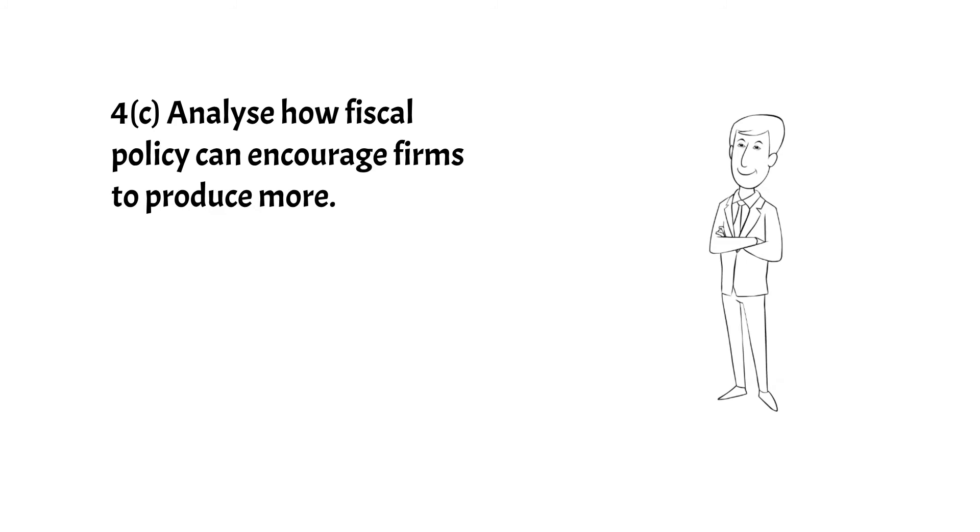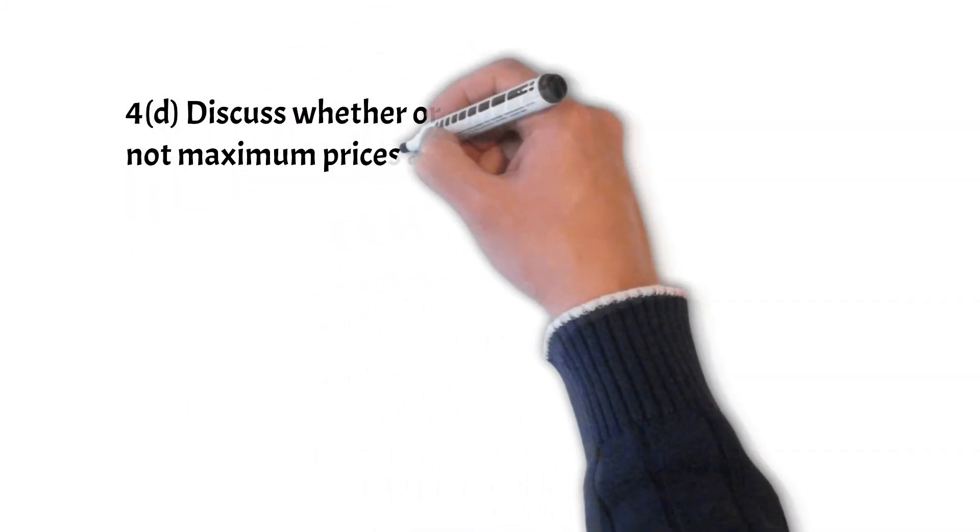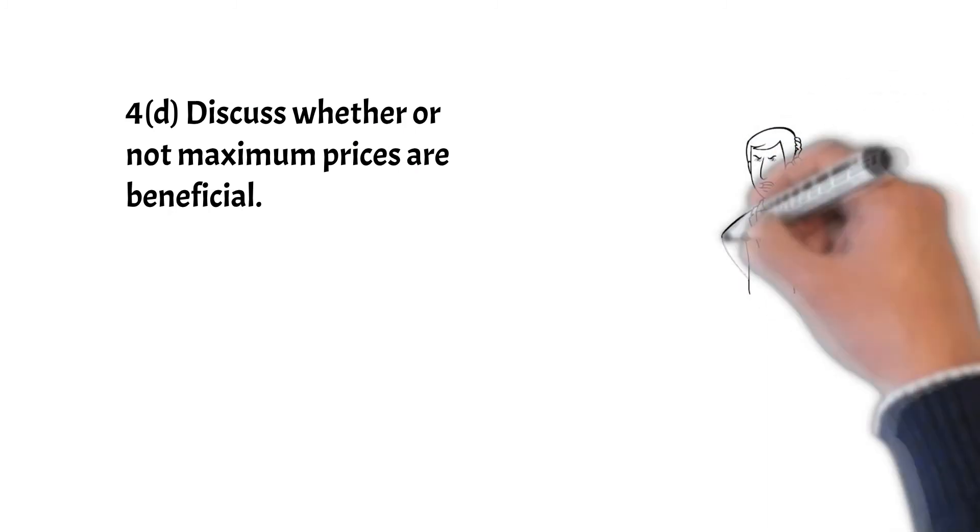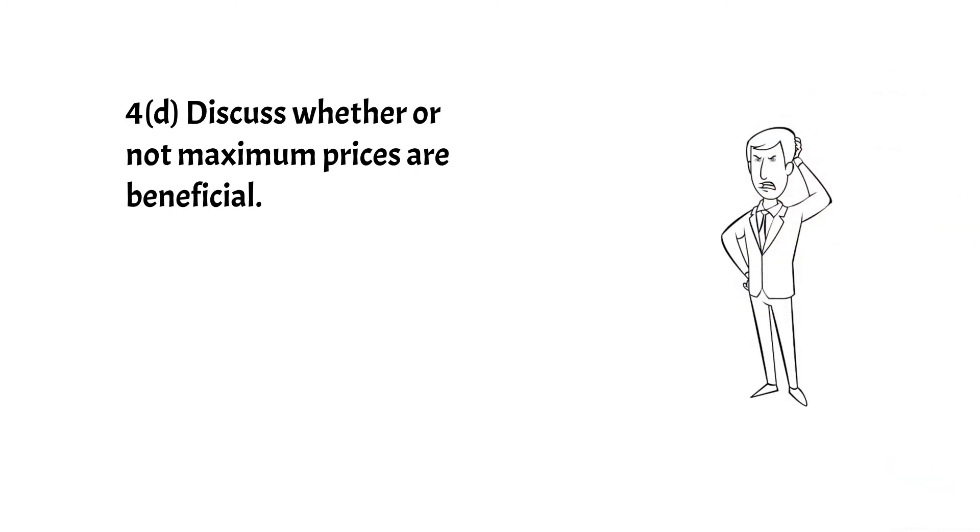Lastly for question 4, part d: discuss whether or not maximum prices are beneficial. Remember to include both sides of the argument. Why maximum prices will be beneficial: more affordable products, more choices for consumers, less poverty, to prevent exploitation of consumers by producers especially monopolies, firms forced to become more efficient to be able to make a profit. Why maximum prices will not be beneficial: producers will not want to supply that much, firms leave the market, could lead to shortage, black market creation, less choices for consumers.